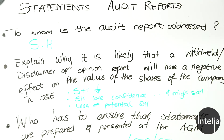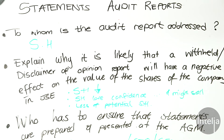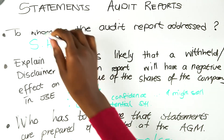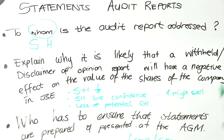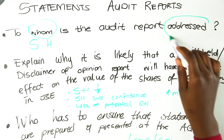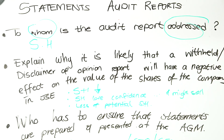The first common question is: to whom is the audit report addressed? Who do we make audit reports for? The answer is the shareholders, so that shareholders can be aware of the state of the business and whether their investments are in safe hands.